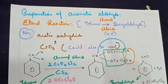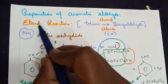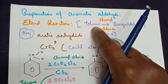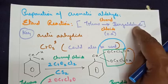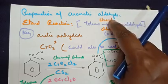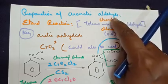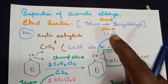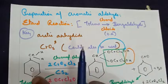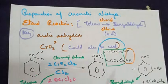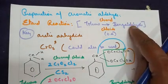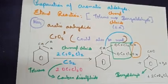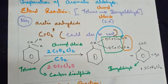The first name reaction is the Etard reaction. The key concept here is that toluene is converted into benzaldehyde when treated in the presence of chromyl chloride, which is an oxidizing agent. Toluene is a benzene ring with a CH3 group; benzaldehyde is a benzene ring with a CHO group.